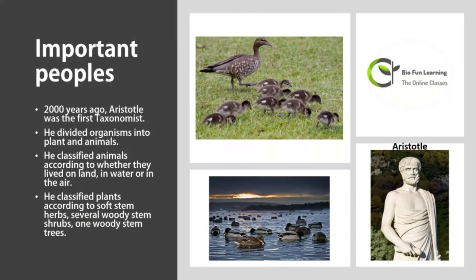Now let's study the important people who had major contributions in classification of living organisms. Approximately 2000 years ago, Aristotle was the first taxonomist. He divided organisms into plants and animals, and classified animals according to whether they lived on land, in water, or in air. This is a very simple way of looking at life but misleading too. For example, organisms living in the sea include whales, octopuses, starfish, and sharks, but they are very different from each other in numerous ways — only their habitat is the same. Also, frogs and ducks live both in water and on land. So the classification needed to be improved.